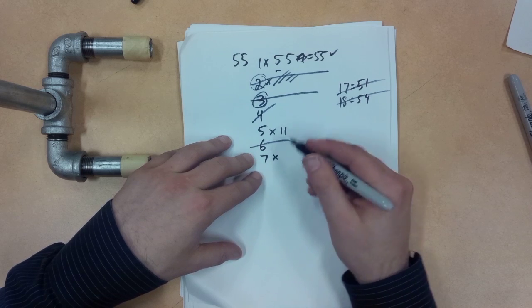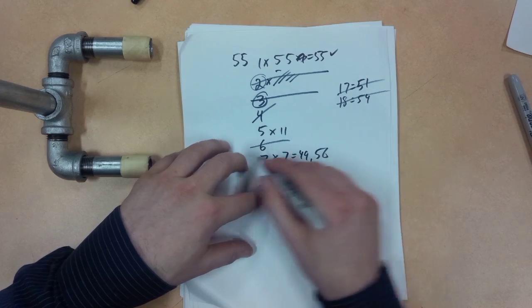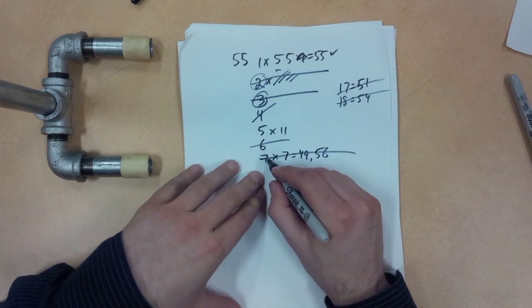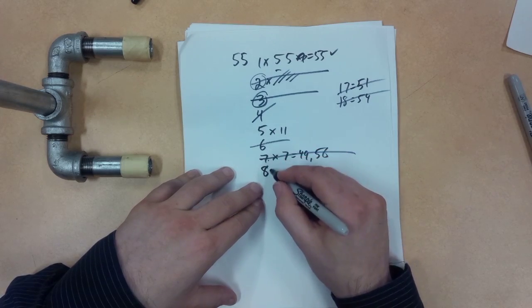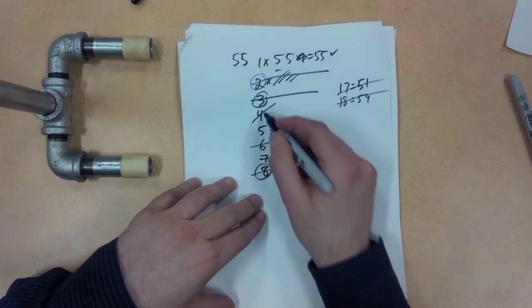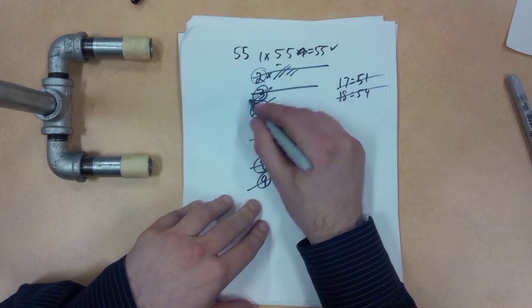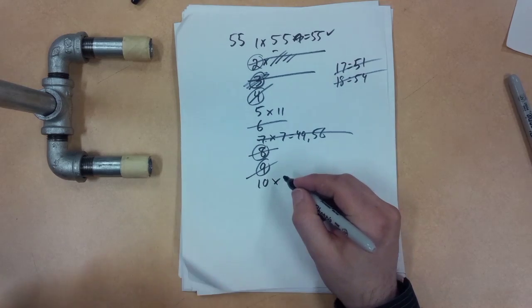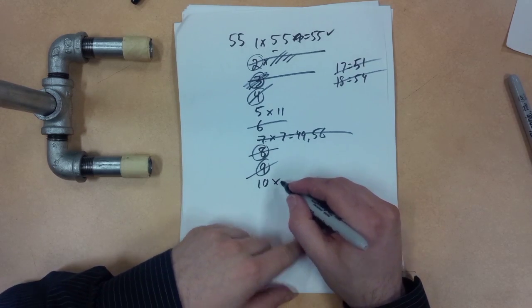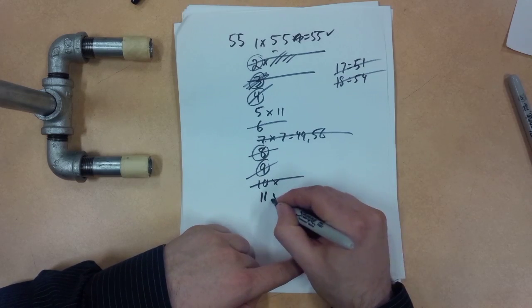I don't have to test 6 because I know that 3 is out. 7 does not give us a 55 because 7 times 7 is 49. Next one is 56. There's no 55. Because 7 is out, that means 14 is out. 8, I don't even have to test for 8 because I know that 4 is out. 9, I don't have to test for 9 because I know that 3 is out. 10, if we skip count, we know we're never going to hit it because 10, 20, we'll get 50, 60. So 10 is out.